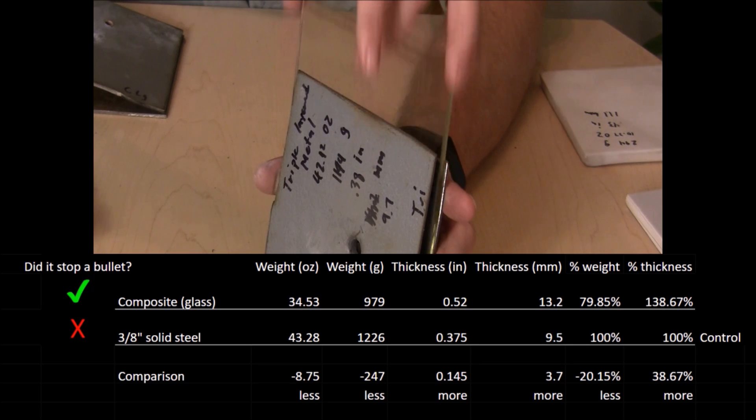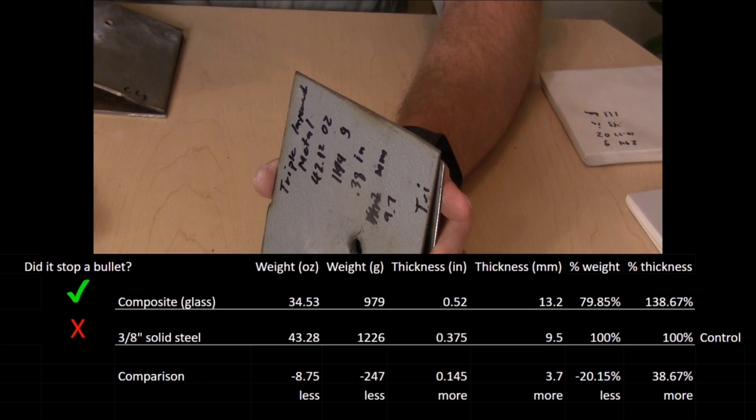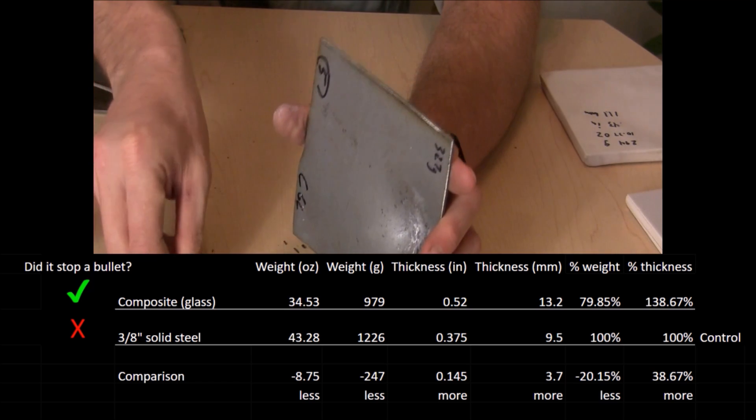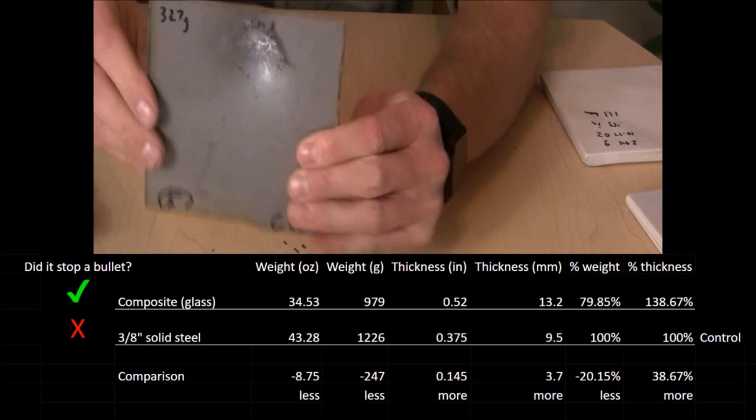Using a layer of tempered glass inside our target, we were able to stop the 5.56 round at 20% less weight than the control, leaving only this large dent on the rear plate.